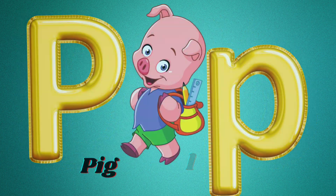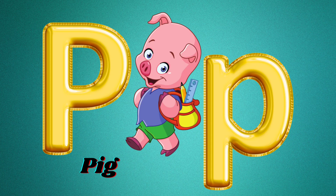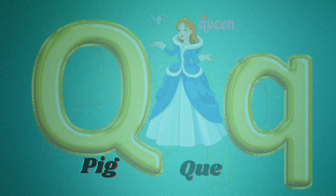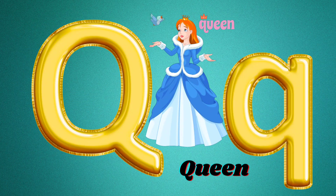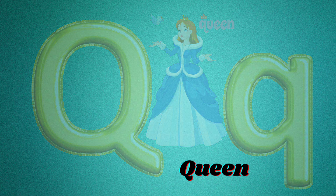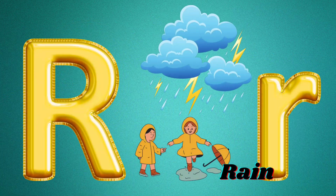P is for pig rolling in the park. Q is for queen with a shiny crown. R is for rain falling down.